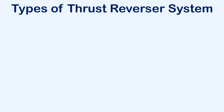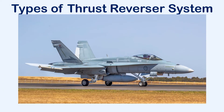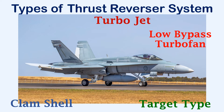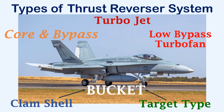Depending on the type of engine, there are different types of thrust reversers that are installed. On turbojet and low bypass turbofan engines, a clamshell or target type of thrust reverser is used. These reversers are also called bucket type reversers. They will deflect the air coming from the core and the bypass section forward to create the backward force.